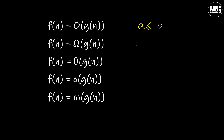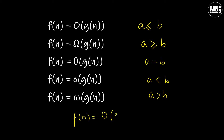The Big Omega notation is like a is greater than or equal to b. Theta notation can be represented as a equals b. f(n) is the small o of g(n) is like a is less than b, and the small omega notation is like a is greater than b. We say that f(n) is asymptotically smaller or equal to g(n) if f(n) is the Big O of g(n).